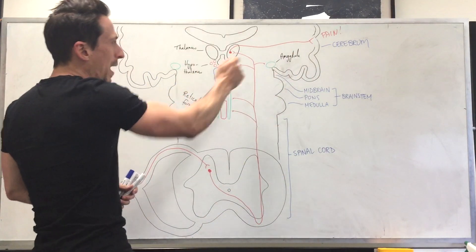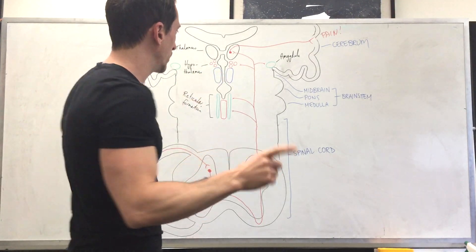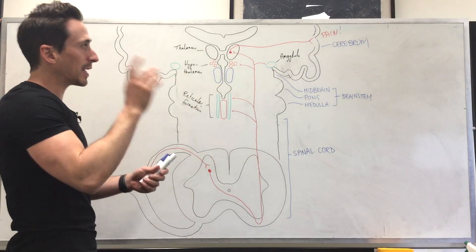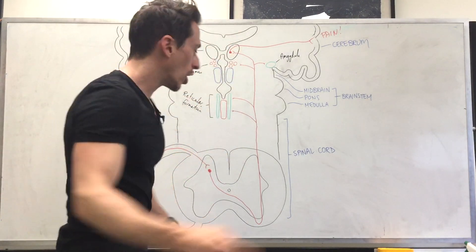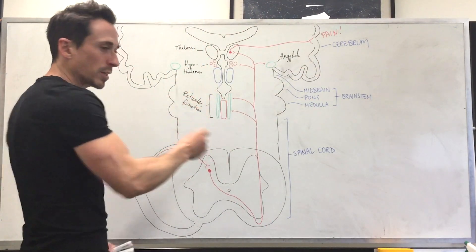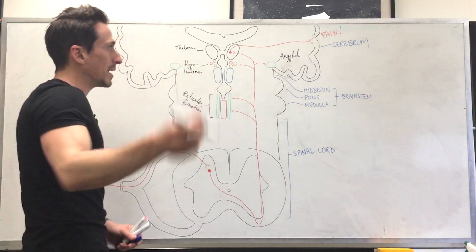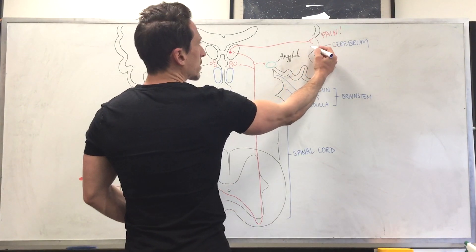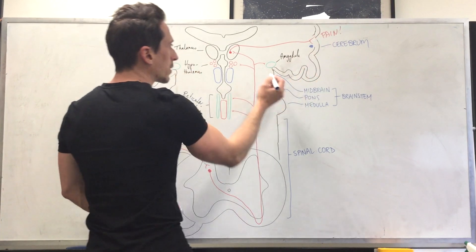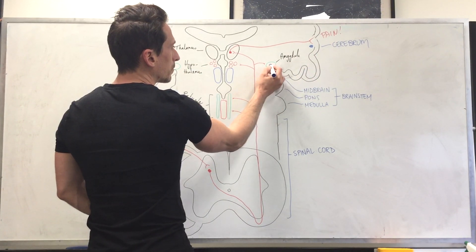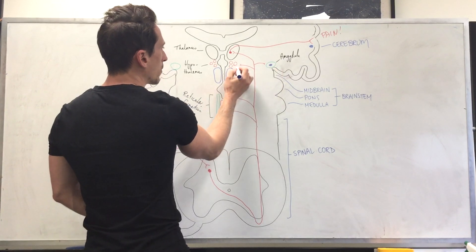This is all ascending pain, but something important happens here. This important thing is that we have a descending signal that goes down to the spinal cord to stop this pain or try to mitigate it. Now it comes from, first of all, it's going to come from the cerebral cortex. It's going to come from the amygdala. It's going to come from the hypothalamus.